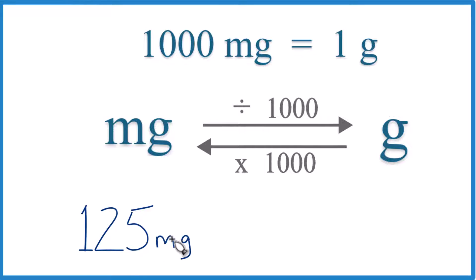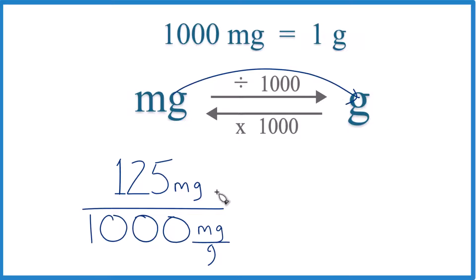Since we have 125 milligrams, we go to grams, we divide by 1,000, like this. So really we're just dividing 125 by 1,000 to get milligrams to grams. But if you look at the units,